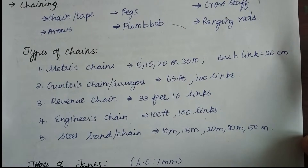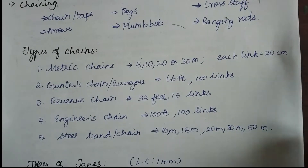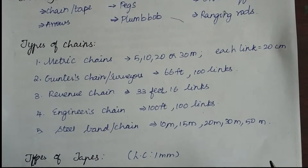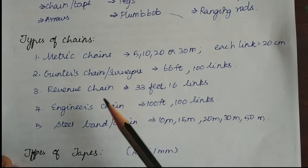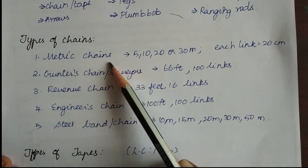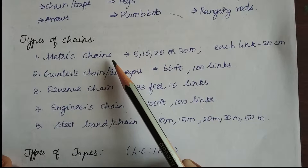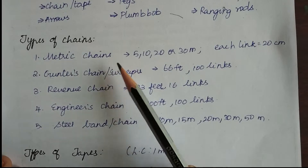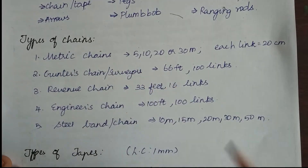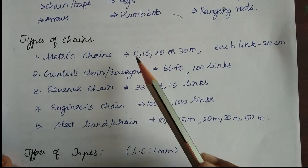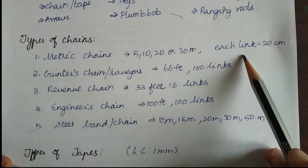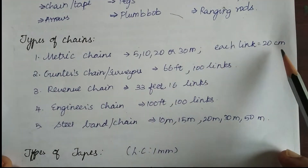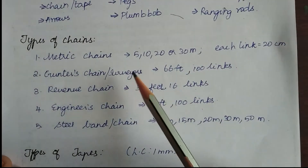There are different types of chains available; based on our requirement we can select the type of chain we want. The first type is metric chains — this is a commonly used type and is available in many different sizes. Each link in a metric chain is 20 centimeters long.